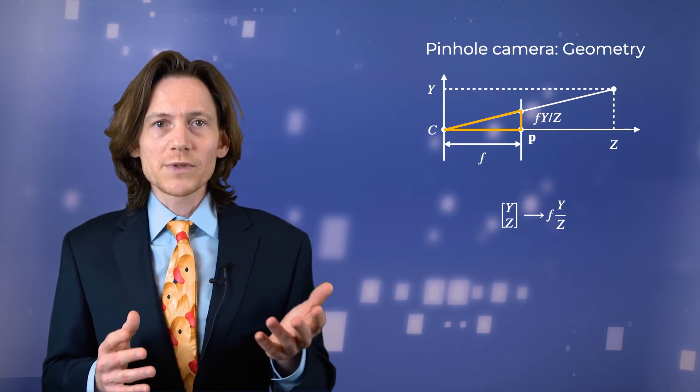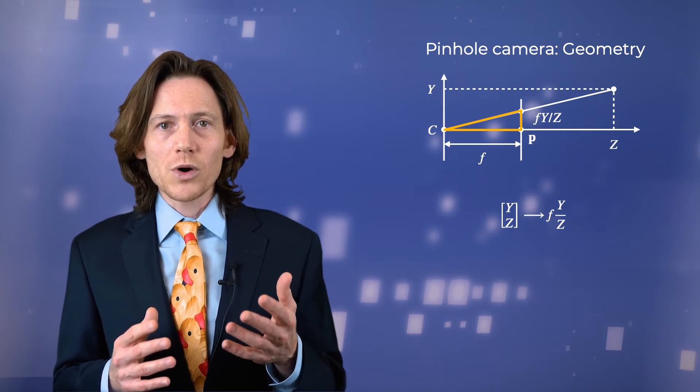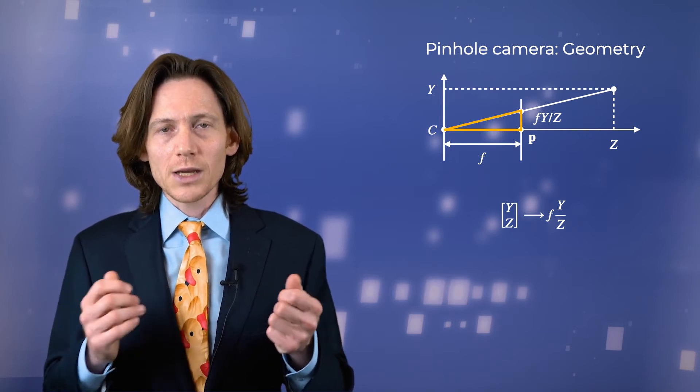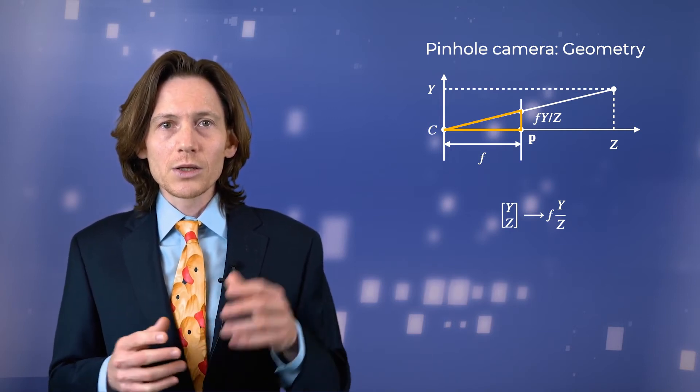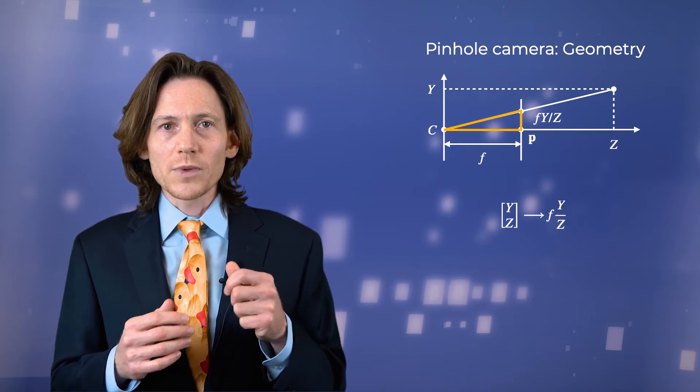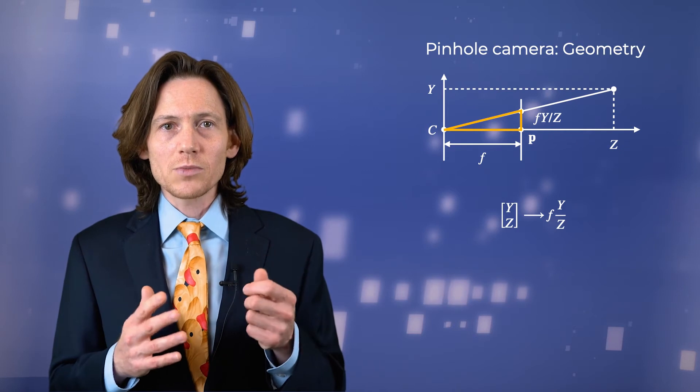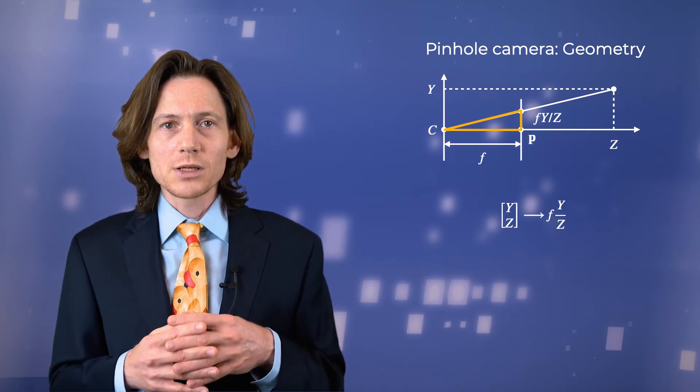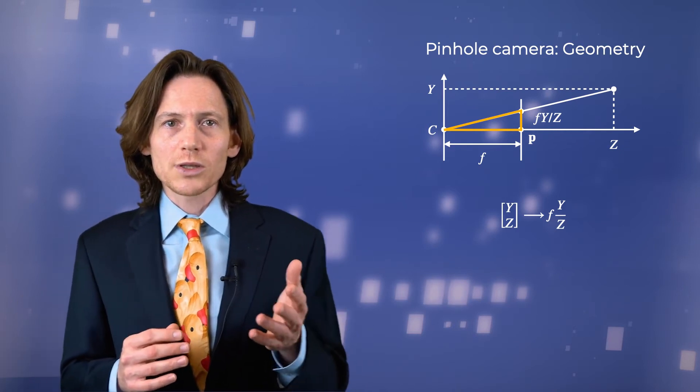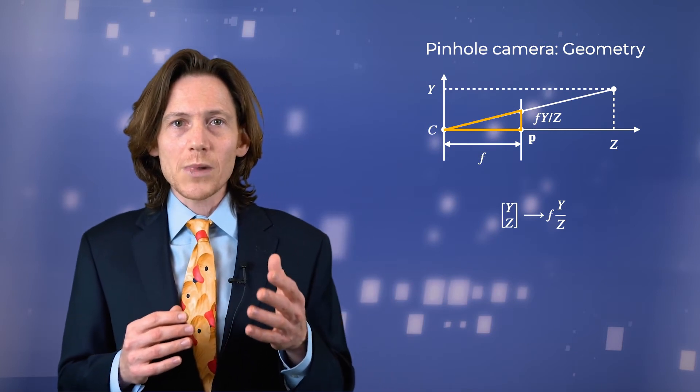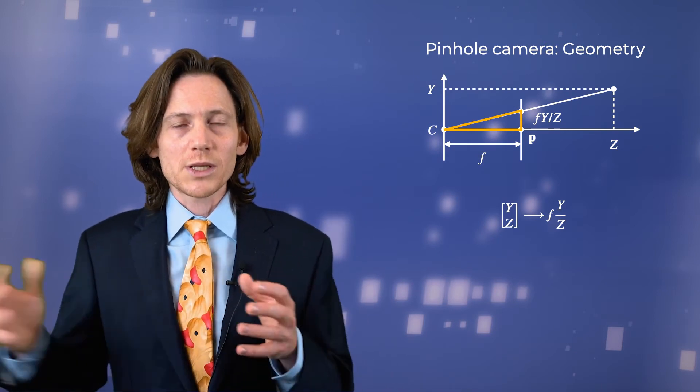The larger triangle has an adjacent side of length z and an opposite side of height y. The other triangle has an adjacent side of length f, which is the focal length. By properties of similar triangles, the coordinate of the projected point on the image is given by f times y divided by z.